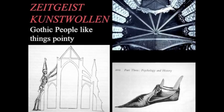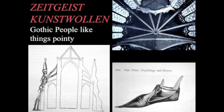So the Gothic people like things pointy, and of course one of the things they liked pointy was architecture. But the scholar would say it's not just that — they also liked pointy shoes. If you look at pictures of people wearing armor from this period, you'll often see the pointy shoe. This is a section through a Gothic cathedral where you have the pointed roof, the pointed turrets, the pointed arches.